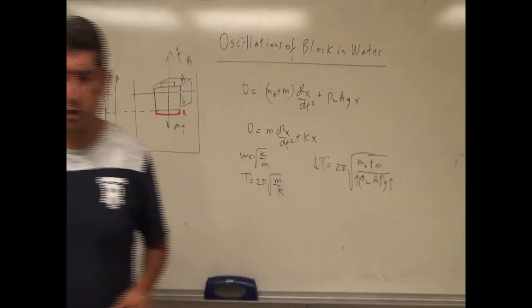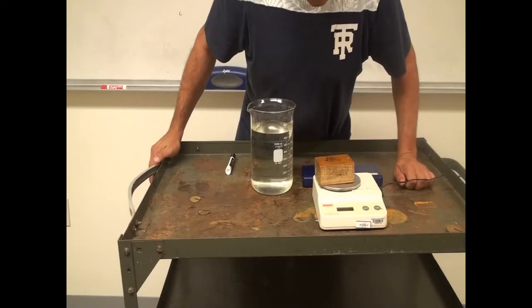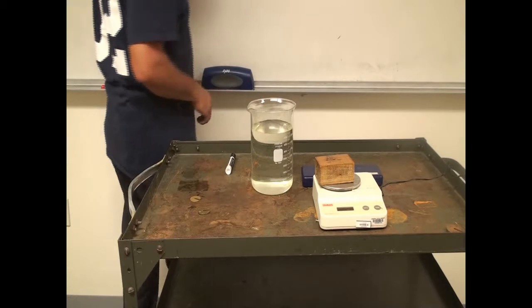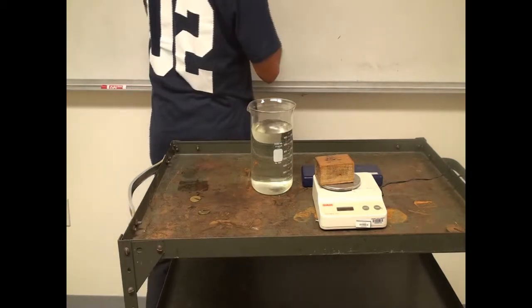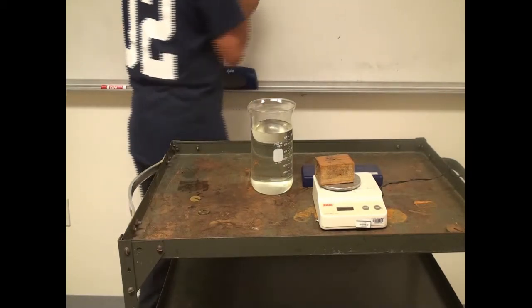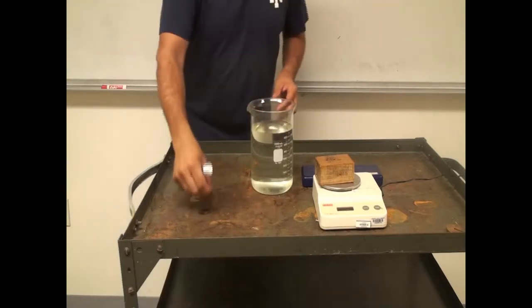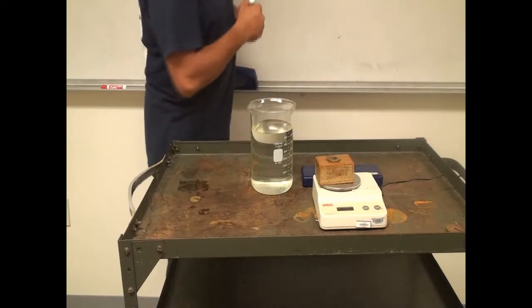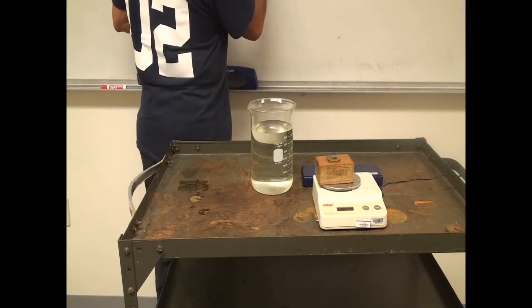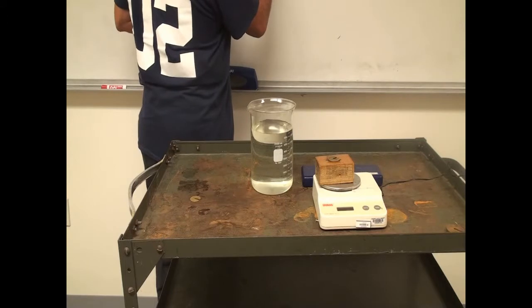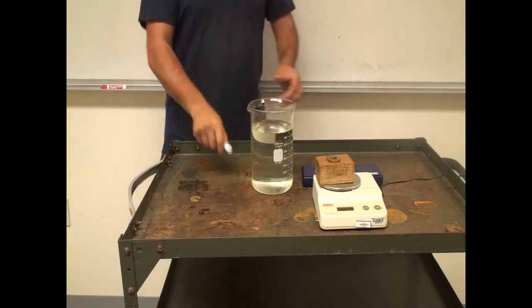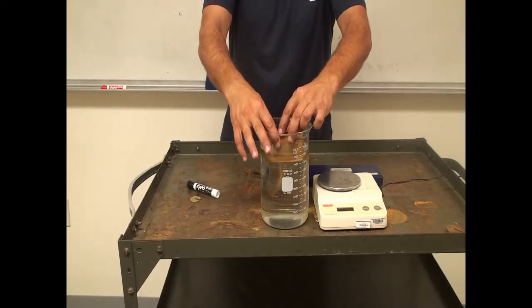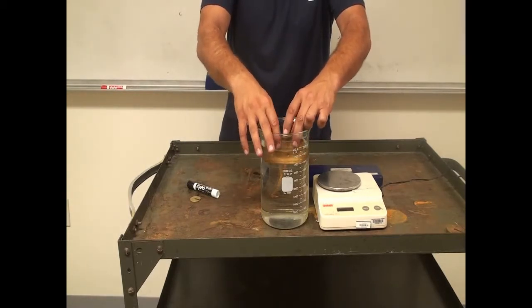So let's see the experiment. The scale shows 175 grams — so we'll record that as the block mass. Then I put this extra weight on it, which is 20 grams. So the extra weight is 20 grams. Then I put it in this water. After I put it in, it naturally sinks to a certain depth — its equilibrium depth.